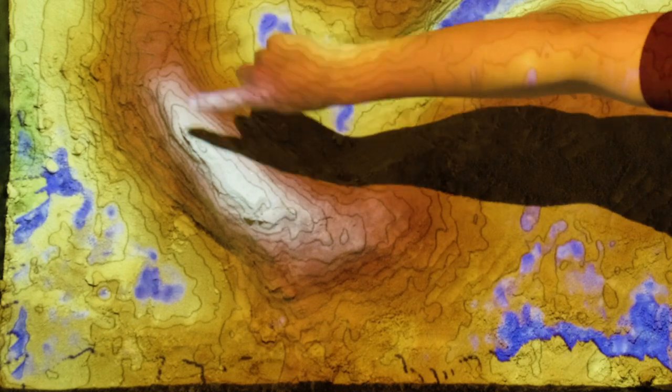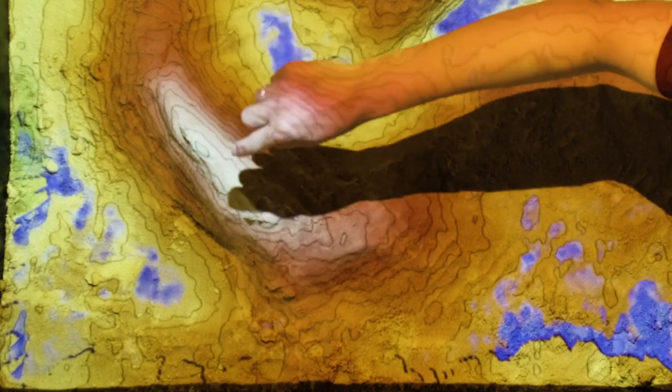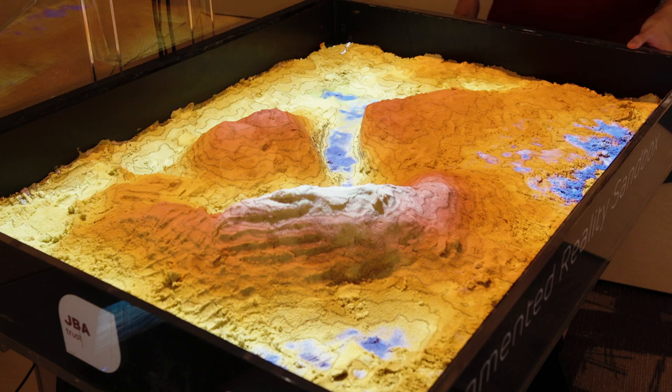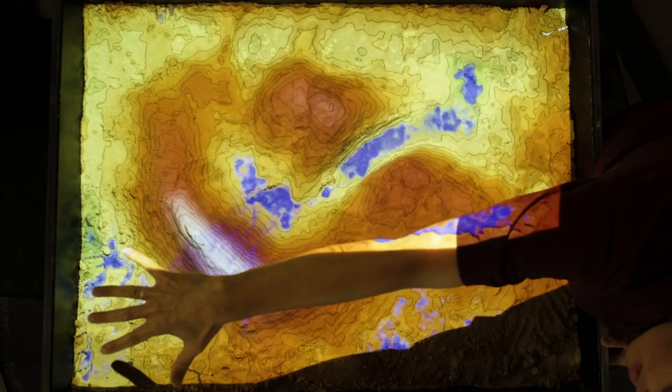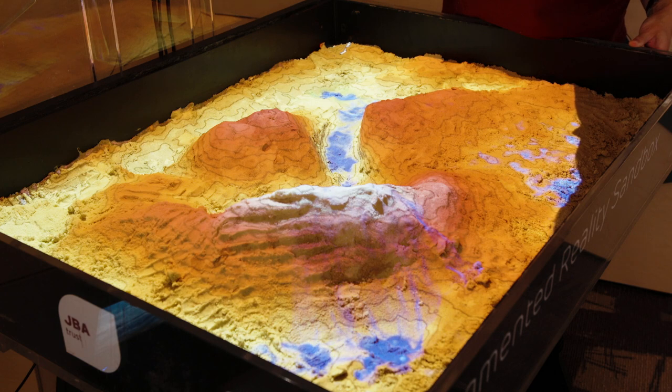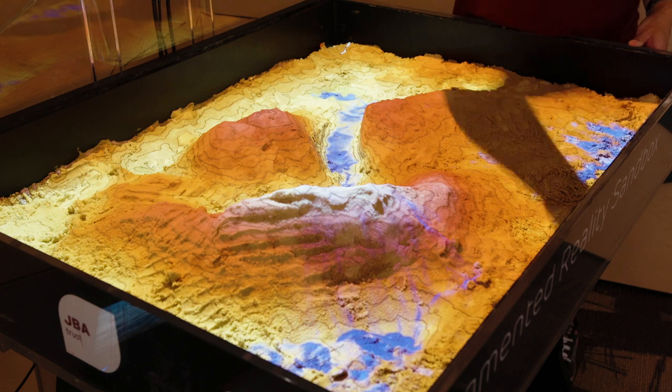In this area here the contour lines are spaced very closely together and that shows that the hill is steep. If we rain on that hill you can see that the water moves very quickly off that hill and into the valley below.